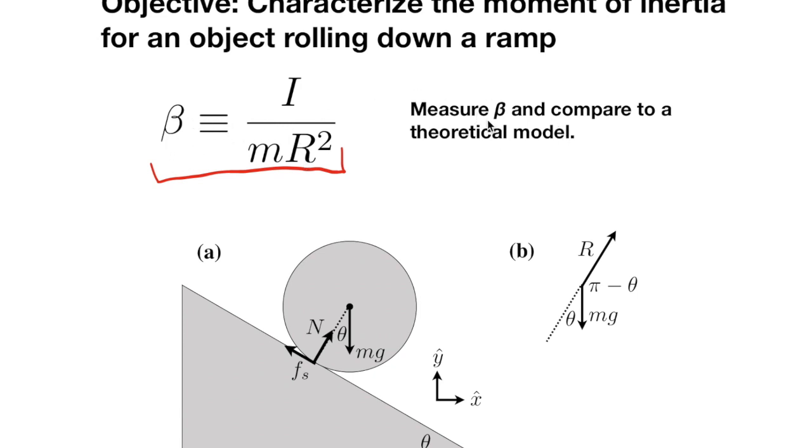What you're going to do is measure the value of beta for an object of your choosing and compare it to a theoretical model, which is something else you will come up with.